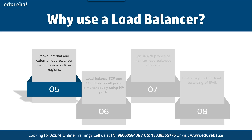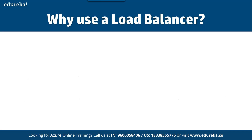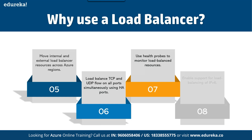You can load balance services on multiple ports, multiple IP addresses, or both. You can also move internal and external load balancer resources across Azure regions, and use on-premise load balancers as well. You can load balance TCP and UDP flows on all ports simultaneously using HA ports — HA being a cluster configuration. TCP is a reliable protocol where you receive acknowledgment of packet delivery; UDP is not reliable and provides no acknowledgment. You should use health probes to monitor load-balanced resources and enable support for load balancing of IP prefixes.